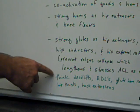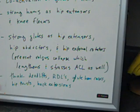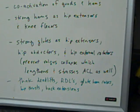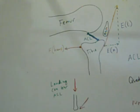So what does this all mean? What exercises are best? Think deadlifts, Romanian deadlifts, glute ham raises, hip thrusts, and back extensions. Those would probably be the best exercises for helping prevent ACL injuries.